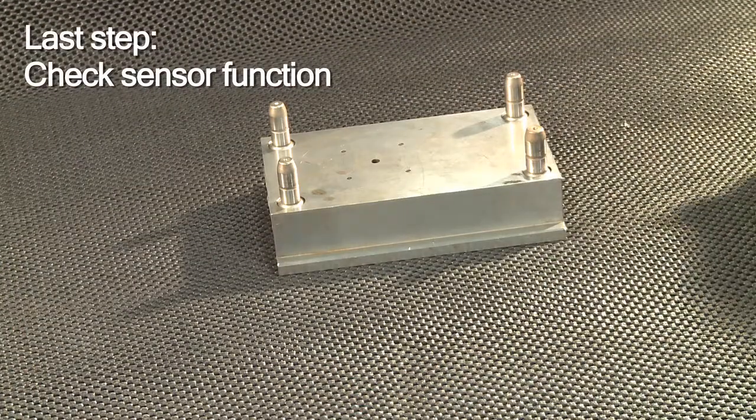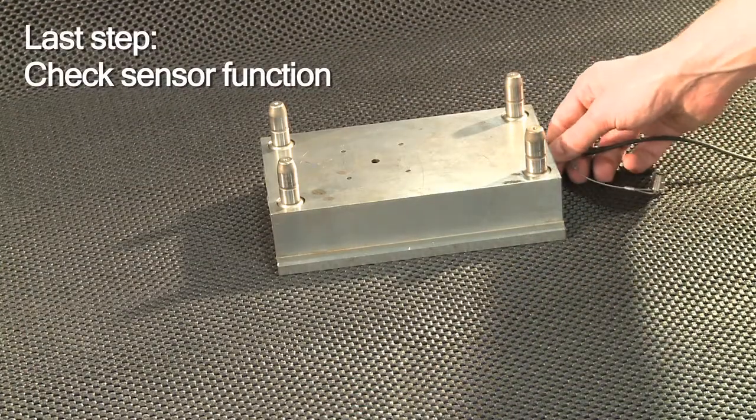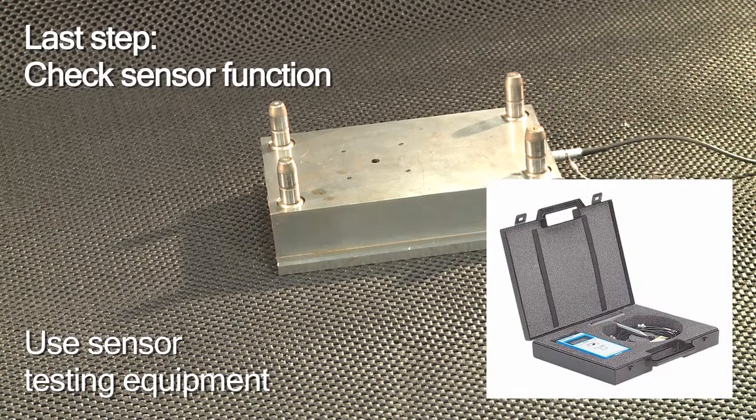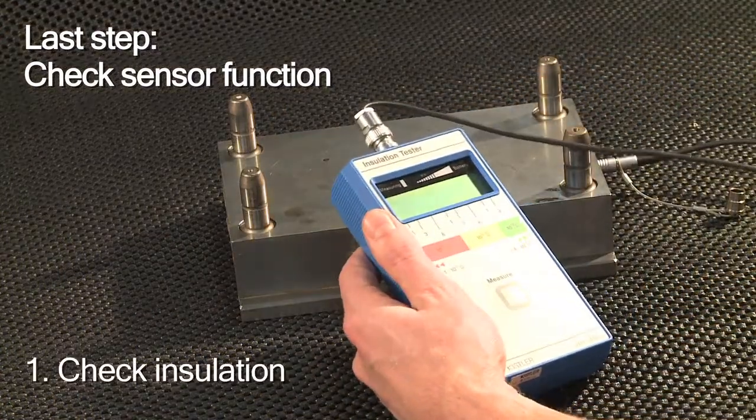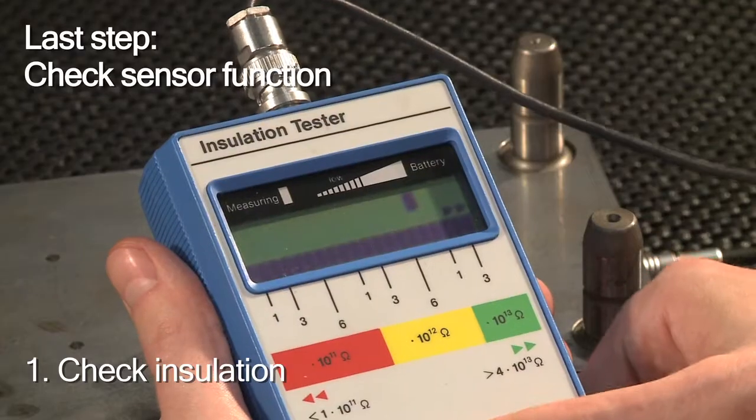To be sure that the installation was successful, you make use of Kistler's sensor testing equipment. First you check the insulation. The bar has to be well into the green field.